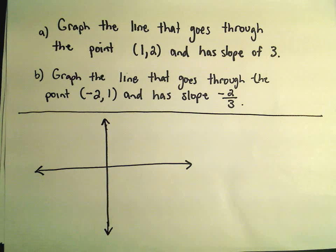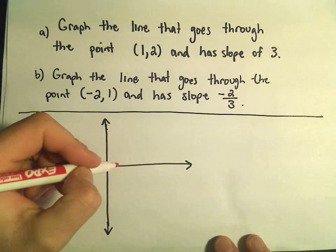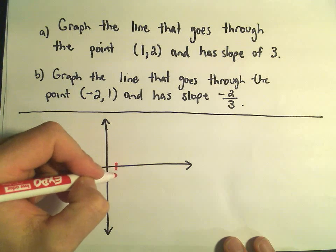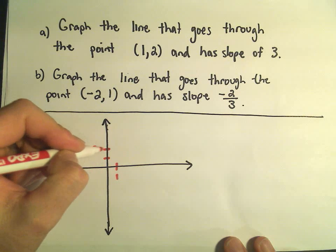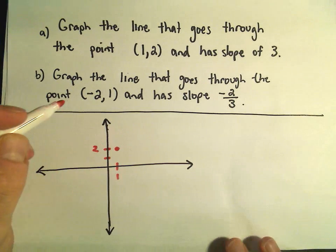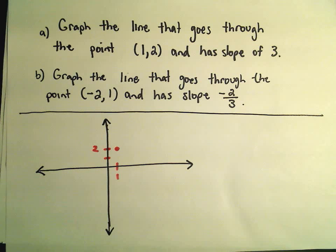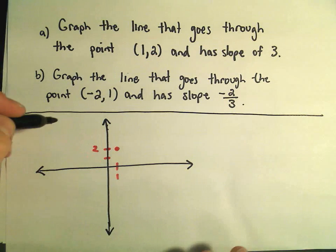So in part A here, suppose we've got a line that goes through the point 1, 2 and has a slope of 3. So let me move over 1 unit, up 2 units. So there's the point 1, 2. And we know it has a slope of 3 in part A.